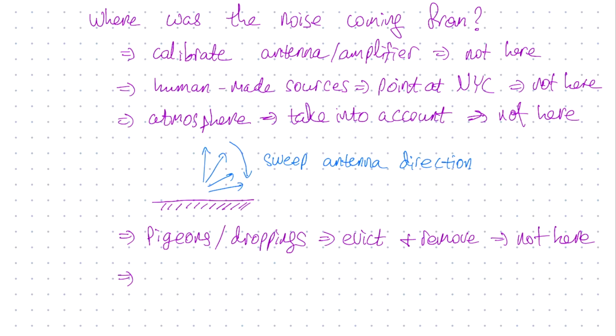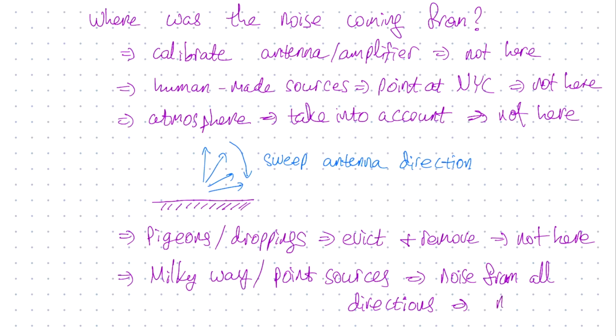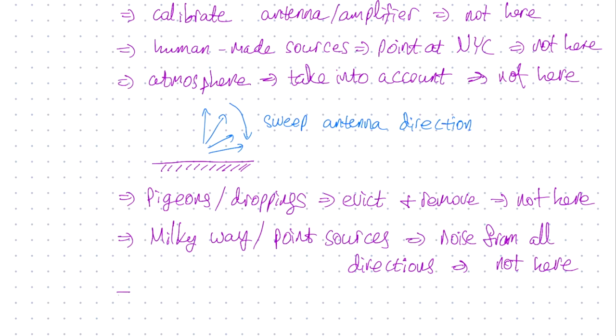At this point, Penzias and Wilson started looking to the sky. Was the noise coming from our own Milky Way galaxy, or perhaps from some sort of point sources? Pointing their antenna in various directions, they figured out that the noise was uniformly from all over the sky and wasn't coming from any particular direction. Having eliminated all the sources of noise that Penzias and Wilson could fathom, the only remaining conclusion was the universe itself was making noise from all directions.